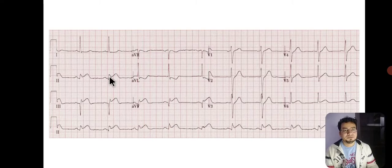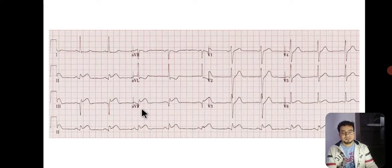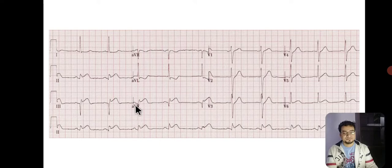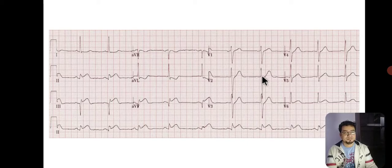Another example shows ST elevation in leads 2, 3, and AVF — this is probably inferior wall MI, because inferior wall MI presents with ST elevation in leads 2, 3, and AVF. The heart rate appears low: 300 divided by 5.5 large boxes gives approximately 54 per minute — sinus bradycardia.